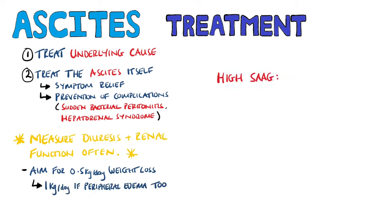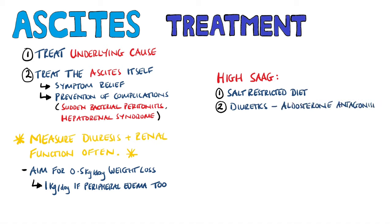High serum ascites albumin gradient cases are first put on a salt-restricted diet. Diuretics are also given, specifically aldosterone antagonists like spironolactone, to prevent excess sodium reabsorption. Patients may also be placed on furosemide. Paracentesis may also be performed, but it can cause the ascites to reform quickly.